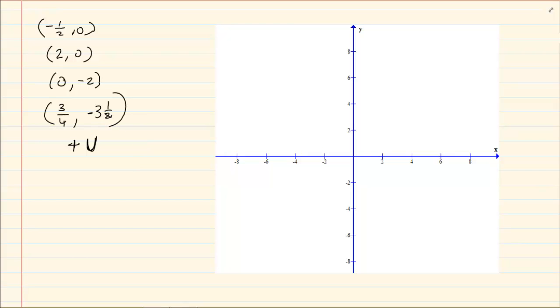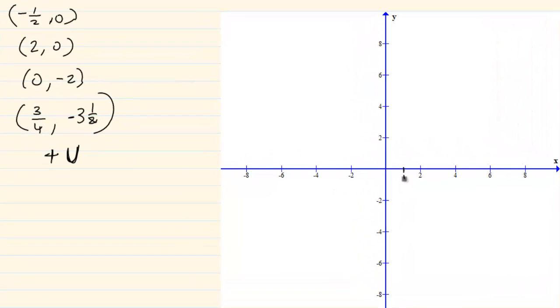Now how do we draw this? Now 3 quarter, if we have our 1 here, 3 quarter is just before your 1. And then we have minus 3 and 8. So if minus 3 is here then it is just after that. So where are we meeting? We are meeting at that point. We also know that it is happy. Now let's do the other coordinates. We have 0 and minus 2. And we have minus a half and 0 and we have 2 and 0. So our graph, if we are joining all the dots, it is going to look like this.